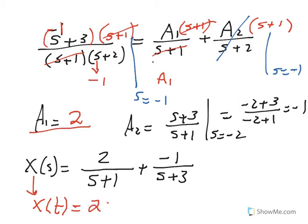Now when I go to the time domain, this simply becomes 2e to the minus t, and the next term is negative e to the minus 3t. So this is an overdamped case with two exponentially decaying functions.